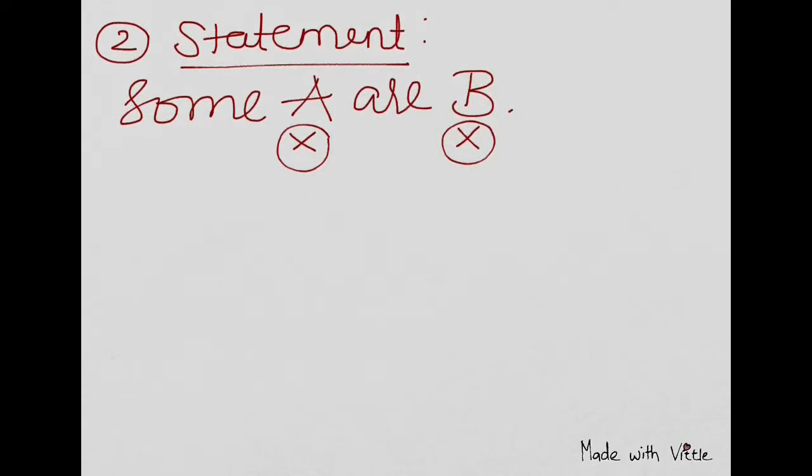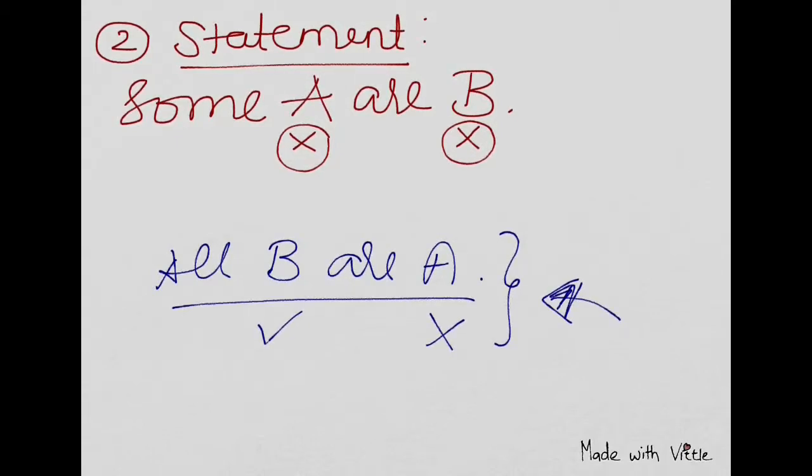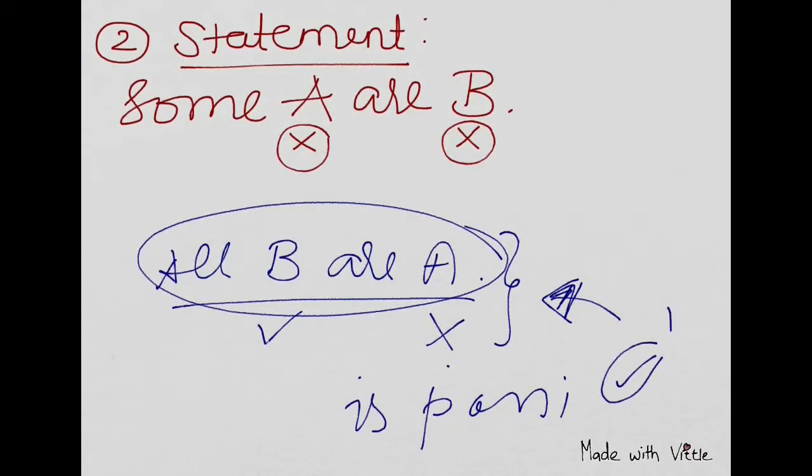So basically these are exceptions. This will not follow concretely, but a possibility case is possible and I have mentioned it there. Now let's take all B are A. So what will this be? Tick cross. So all B are A, tell me, is it possible? So I have explained you again, I think in the first part only, that all B are A is a possibility. It's possible. But as a conclusion, if it's given just all B are A, no, it's not true. But if it's given all B are A is a possibility, it's true.